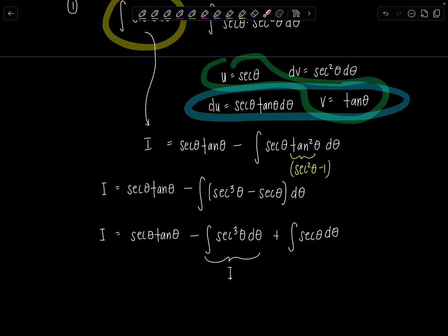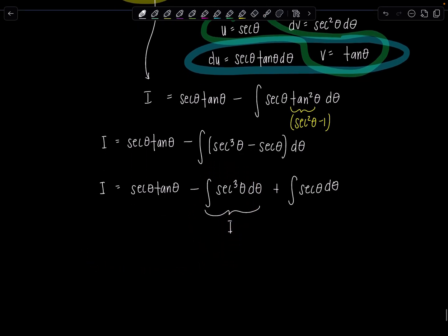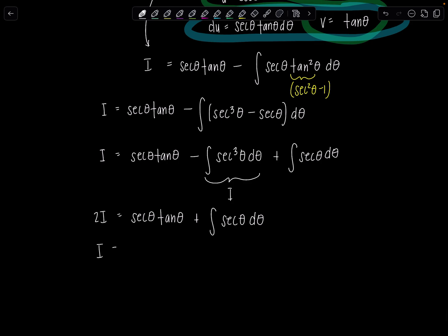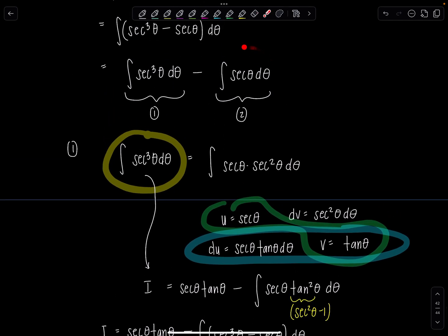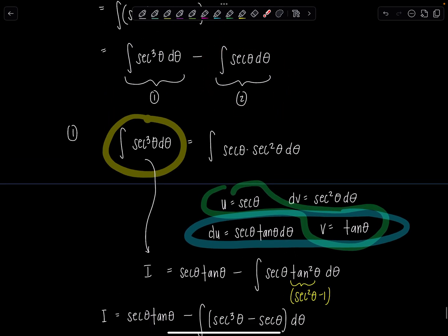So you're solving for i, just like you solve for a variable quantity in an equation. I'm going to move over or add i so it's on the other side. So now I have 2i equals secant theta, tan theta, plus integral secant theta, d theta, and then divide by 2. So i is one half secant theta, tan theta, plus one half integral secant theta, d theta. And then you can do this antiderivative now if you want to save it. Because look, it's the same thing. It's the same thing.